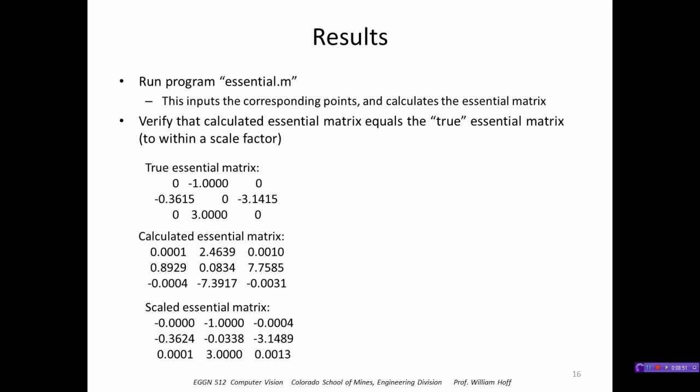I can run it. It's called essential.m and it produces these results—an essential matrix that was calculated here. This is the true matrix that we knew because we created the points. These should be equal. You can see they're not, but they are equal actually if we scale—if we multiply a scale factor by this to get this. Then we get a result that is very close.